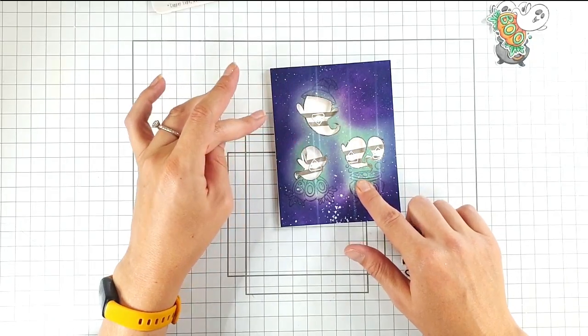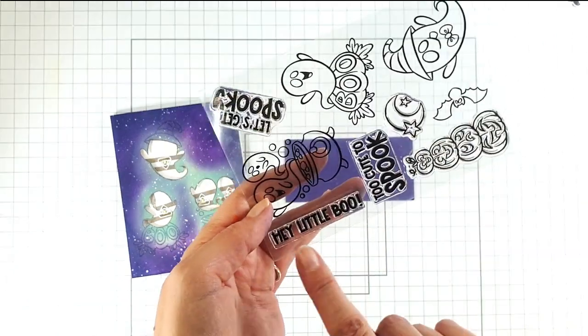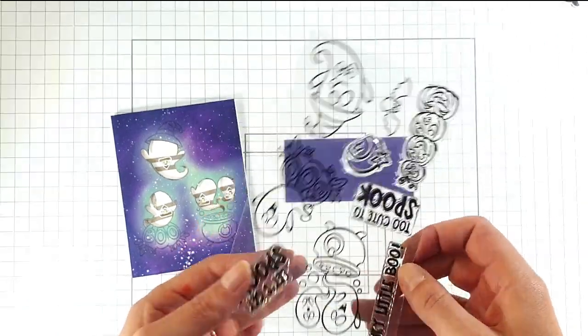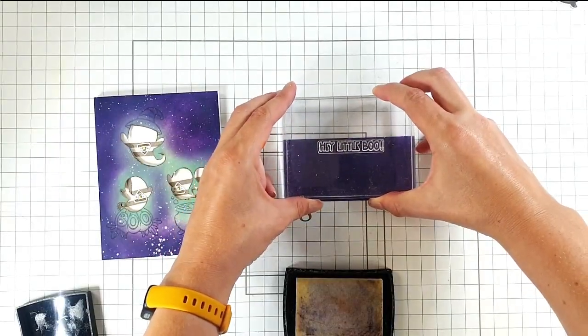You can see those light up when I press the cauldron here. Then I'm going to use this Hey Little Boo sentiment and I'm going to heat emboss it onto some purple cardstock.